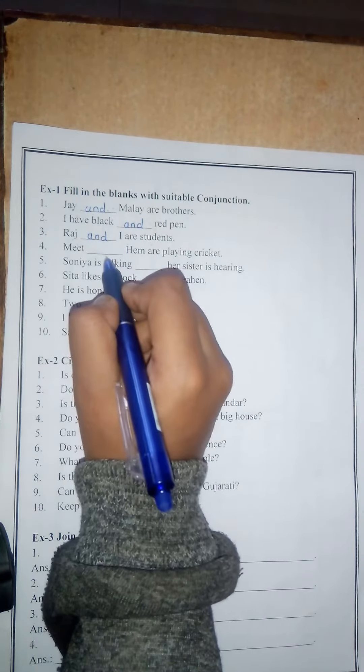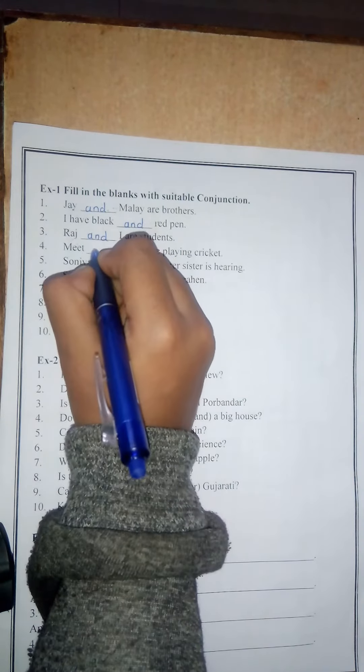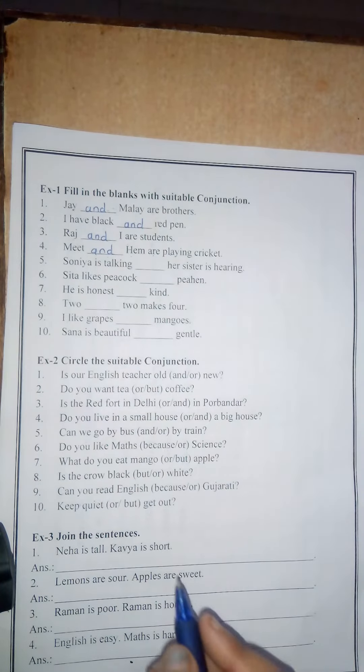Number 4: Meet blank him are playing cricket. Here two names are there, so you have to join them. Meet and him are playing cricket.